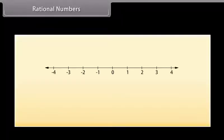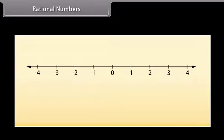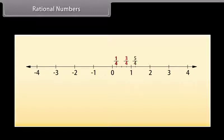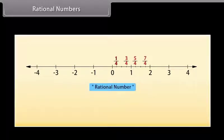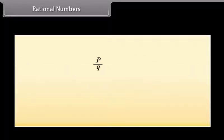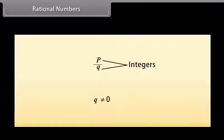Now, if we see between the numbers 0 and 1, or 1 and 2, we will see numbers like 1 by 4, 3 by 4, and so on. The collection of these numbers is called rational numbers, denoted by the symbol Q. Rational numbers are written in the form P by Q, where P and Q are integers, and Q is not equal to 0.